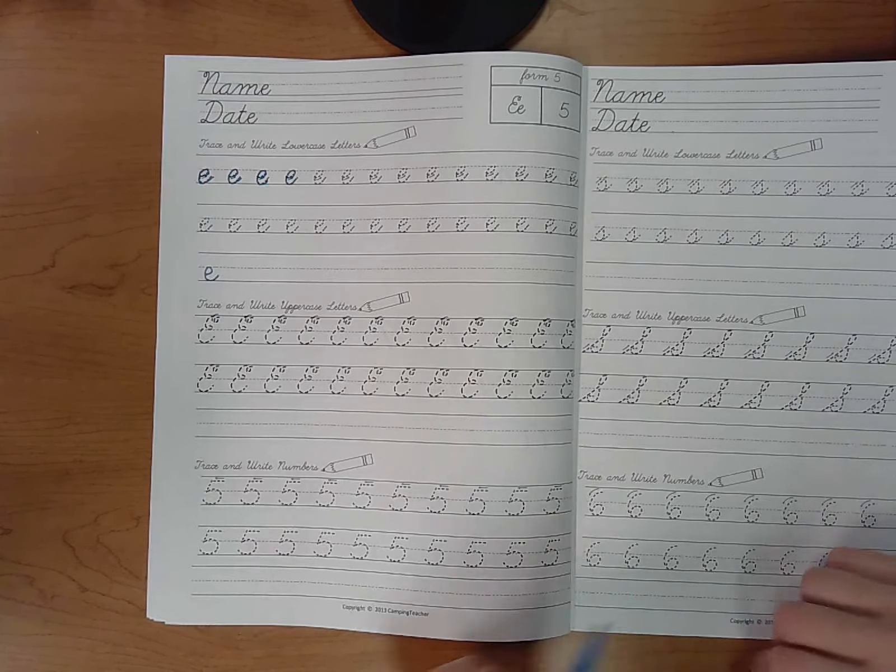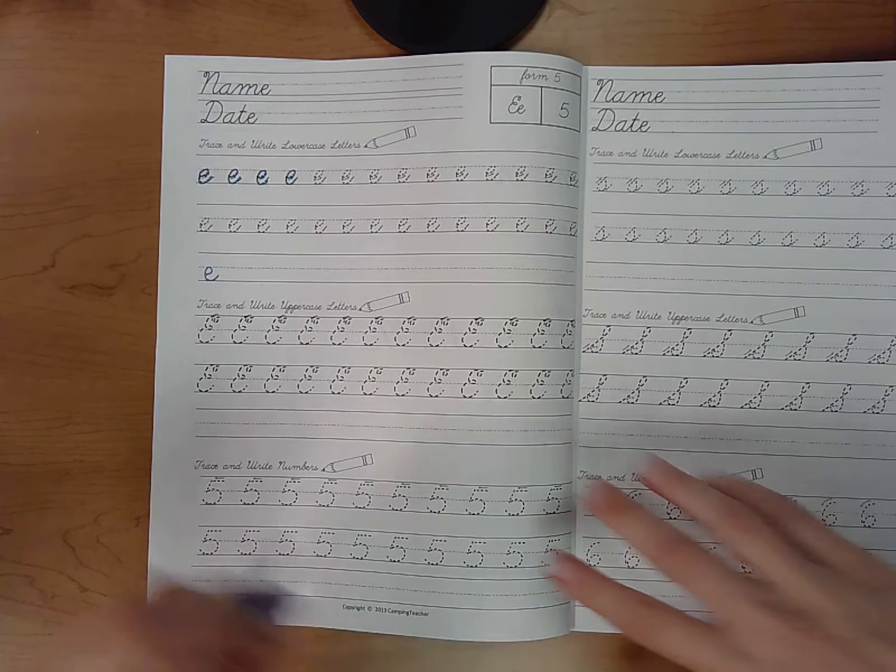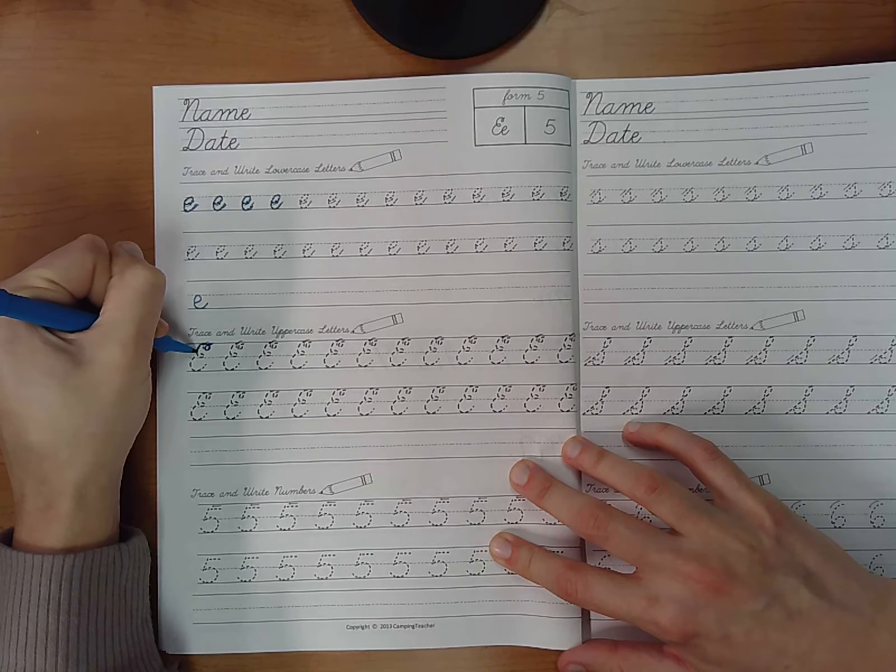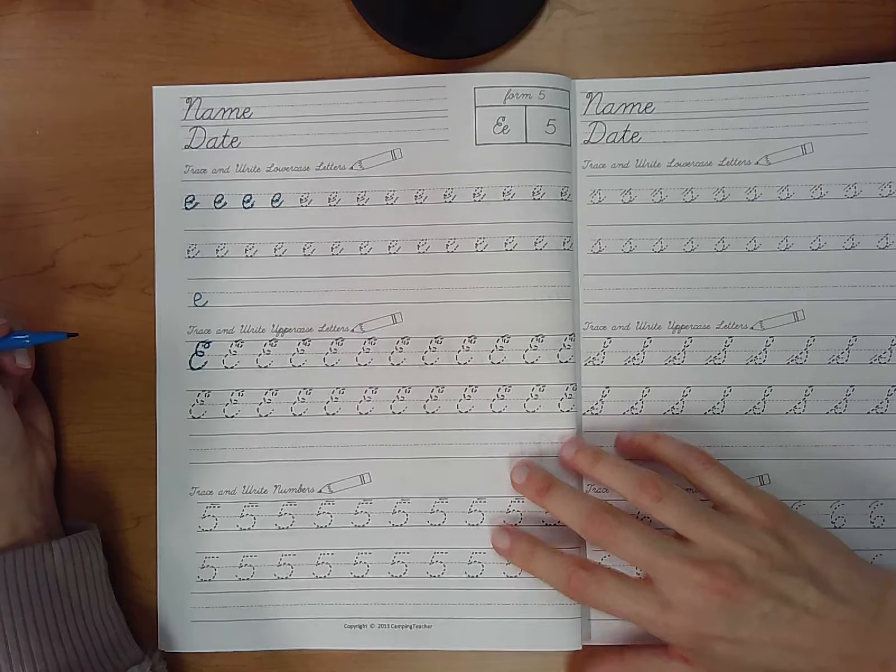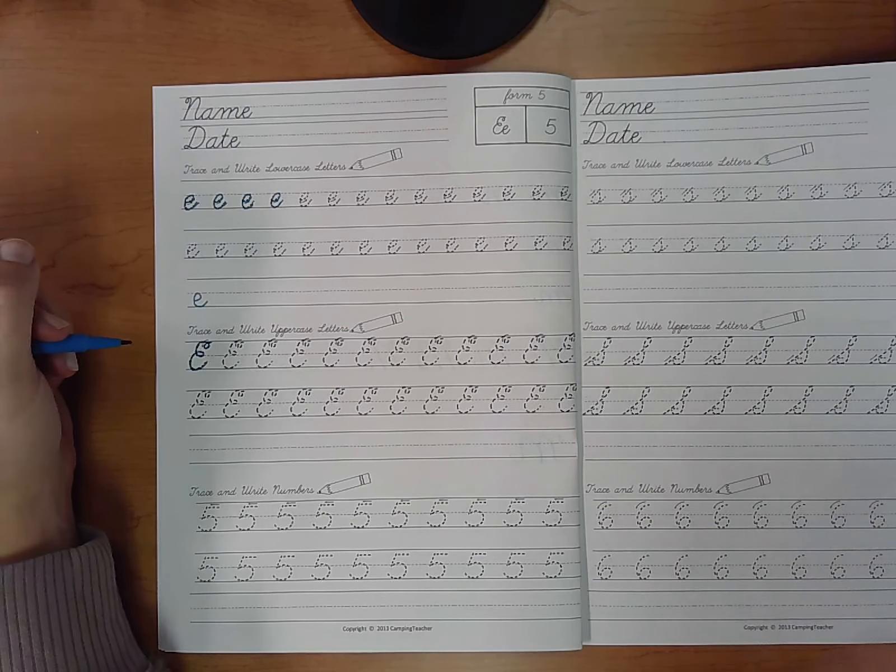All right now it is uppercase E time. We have another curly Q at the top. We're gonna start at the very top. We're gonna go around our curly Q and make our E. It's kind of like a backwards three. So lots of curly Qs here.